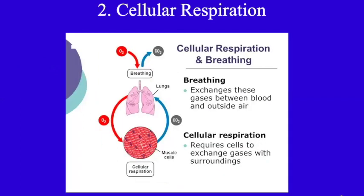Now let us go to respiration. When oxygen is inhaled, it reaches the respiratory system — the trachea, bronchus, bronchioles, and alveoli. The alveoli is the place of gas exchange. The oxygenated blood will reach each cell, where cellular respiration takes place. We get energy and the byproduct is also carbon dioxide. This carbon dioxide through the bloodstream reaches the lungs in the alveoli, where oxygen is taken in and CO2 is released.